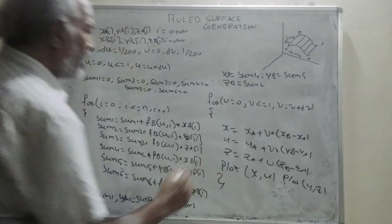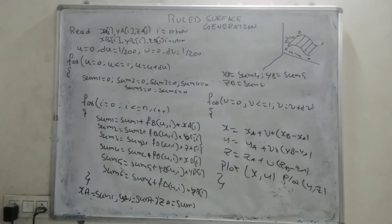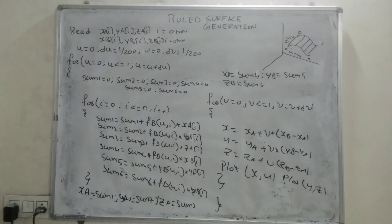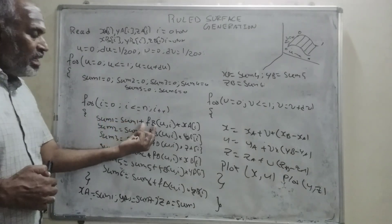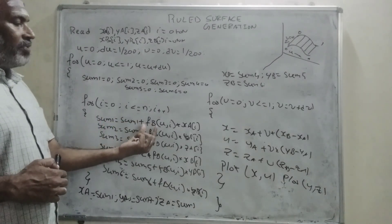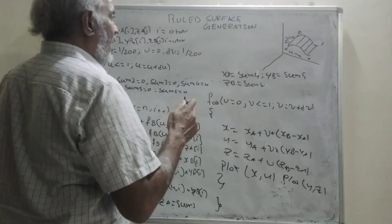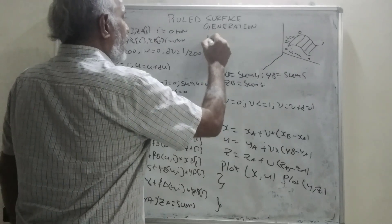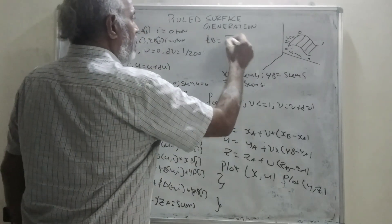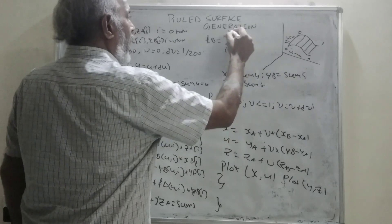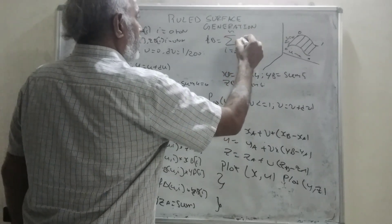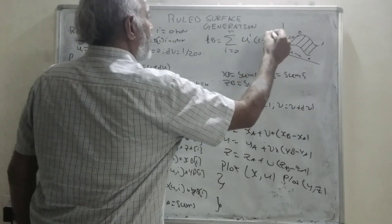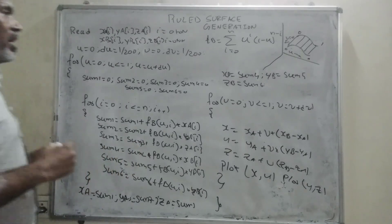With this, we can conclude, we have simple ruled surface generation, and we complete this one. Now, what is the function f_b? This f_b can be a B-spline function or Bezier function. I will write an equation for a blending function. This f_b equals sigma i equals 0 to n, u to the power of i into 1 minus u to the power of n minus i. This is the equation.